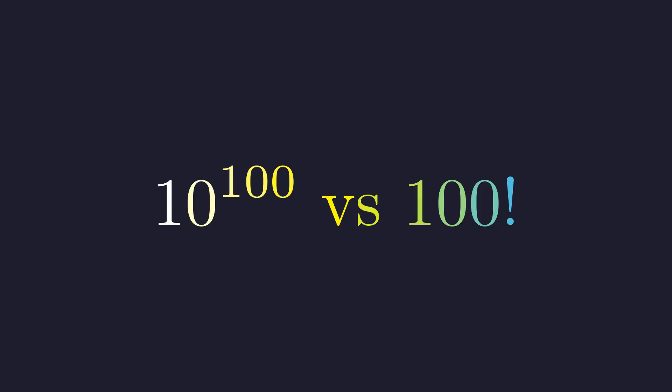One is a one with 100 zeros after it. The other is what you get when you multiply every integer from one all the way up to 100. Let's figure this out.